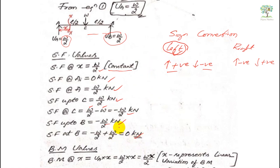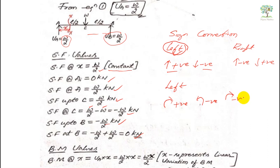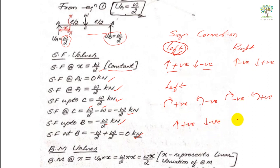Now let us go to the bending moment values. Again I will explain the sign convention. When measuring from the left side, clockwise is positive and anti-clockwise is negative. From the right side, clockwise is negative and anti-clockwise is positive. A simpler way to remember: from the left side, upward forces create clockwise moments, so take upward as positive and downward as negative.